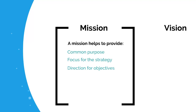A common purpose means that everyone is clear about what they're doing, why they're there, what the purpose of the company is and what they're moving towards — it helps form the company's culture. A focus for the strategy means that when you're making strategic decisions you can measure them against the mission and ask: does this strategy help us achieve the mission? The direction for objectives is similar — it ensures the activities you're doing to meet your objectives are actually consistent with the purpose of the company, the mission.